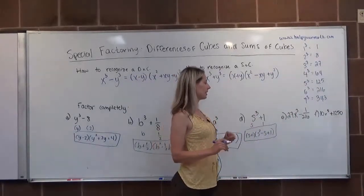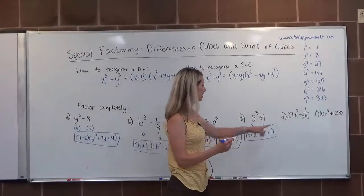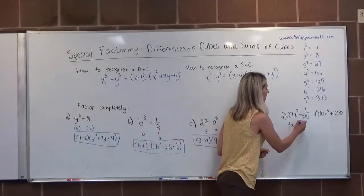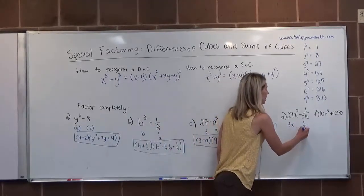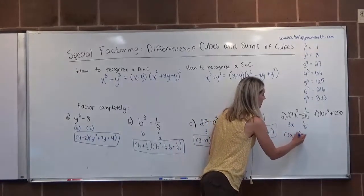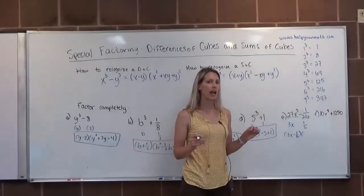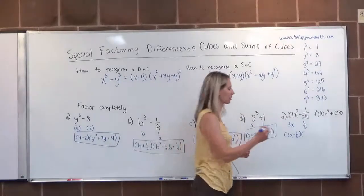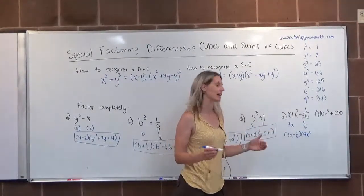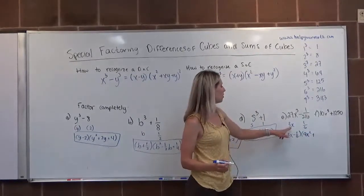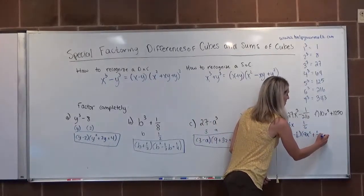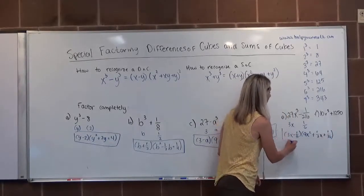Letter E is 27x cubed minus 1 over 216. 27x cubed has a perfect cubed root of 3x. 1 over 216, the perfect cube root is 1/6. These are both perfect cubes and it's subtraction, so this is a difference of cubes. It's going to be root minus root times root squared. Be careful here, 3x squared, we're squaring both parts, is 9x² plus, when we multiply 3x times 1/6, that's 1/2x, plus 1/36. And that would be the final factoring for letter E.